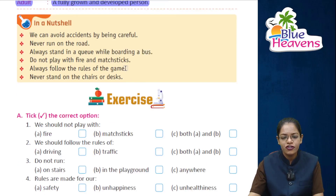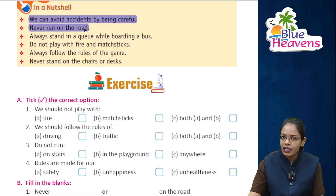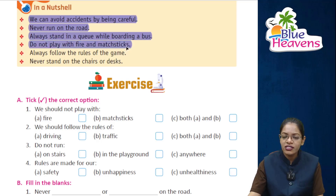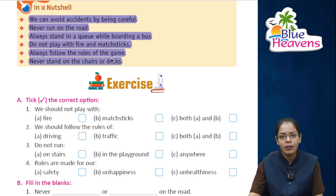Summary points: We can avoid accidents by being careful. Never run on the road. Always stand in a queue while boarding a bus. Do not play with fire and matchsticks. Always follow the rules of the game. Never stand on chairs or desks.